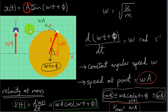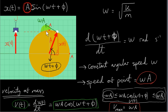Another interesting fact is that the velocity vector of this mass is the vertical component of the velocity vector of this point. The vertical component of this velocity is this vector here, and it's equal to the velocity vector of the mass.